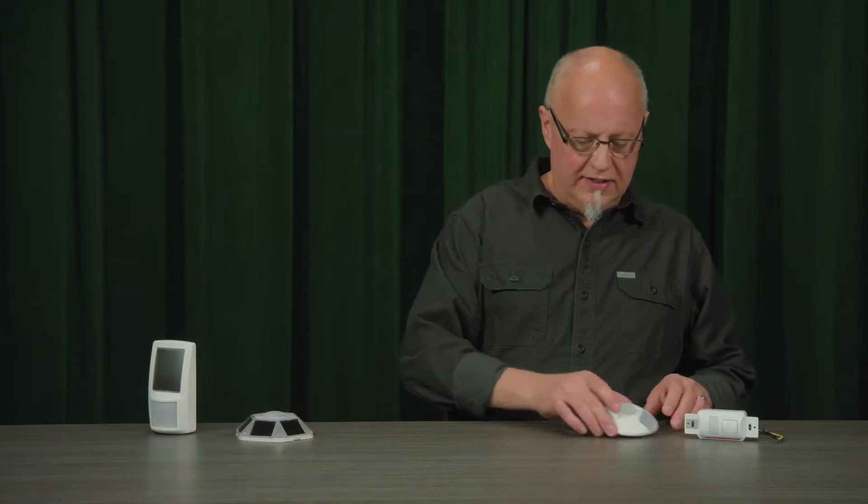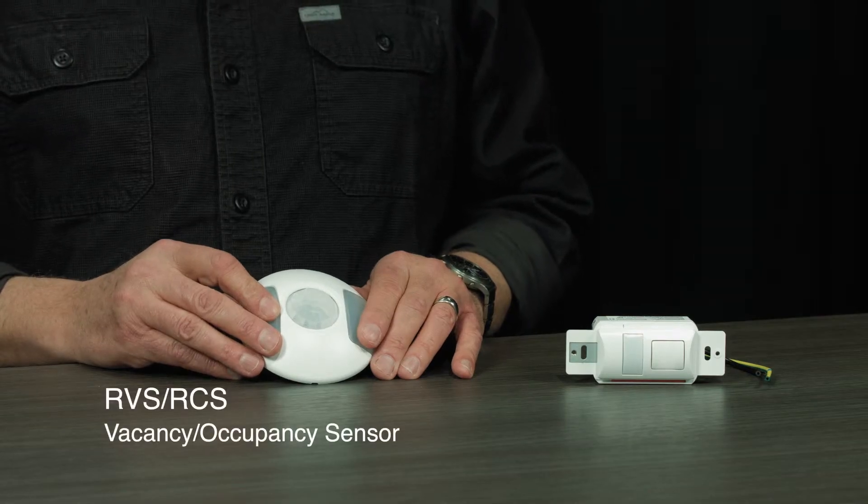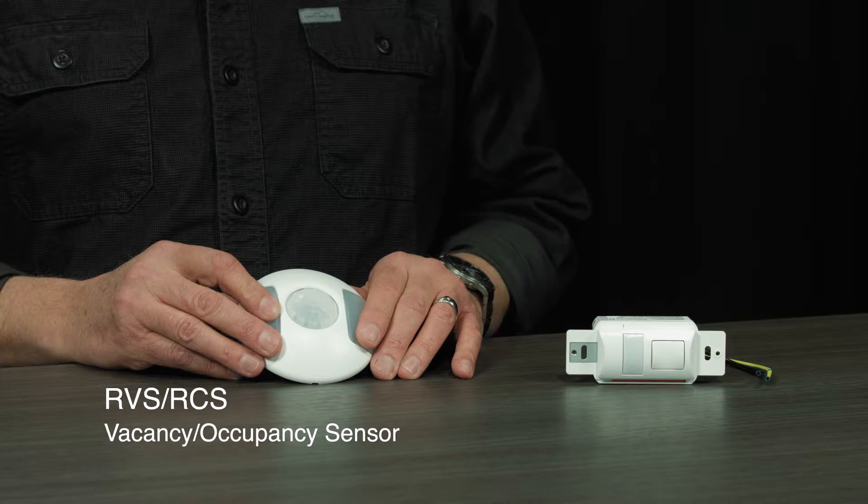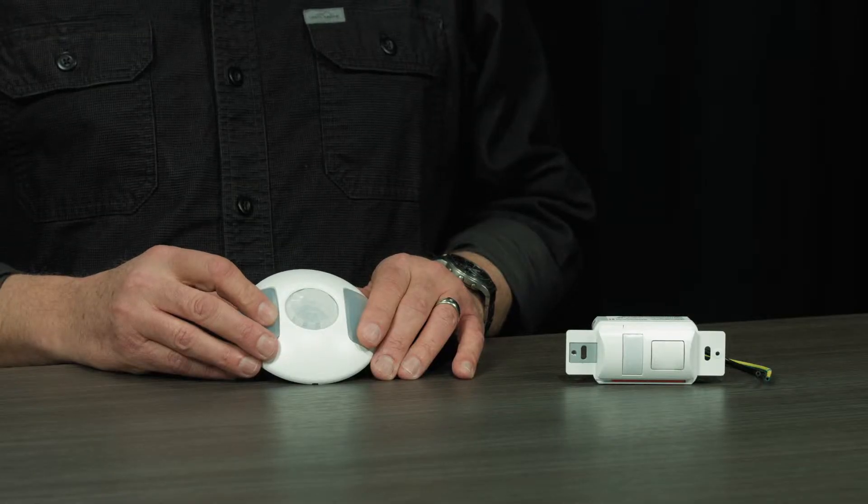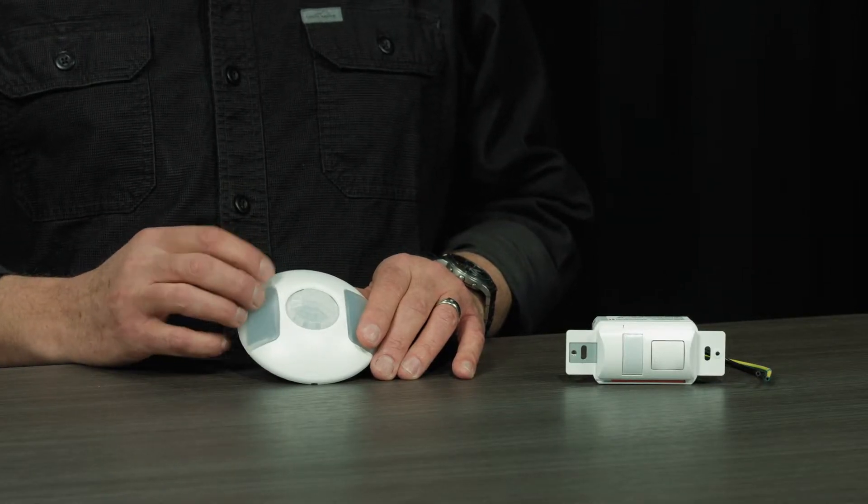This is the RVS or RCS sensor. It comes in two different models either as a vacancy or occupancy sensor. Also available as a passive infrared or a dual technology model. This is the passive infrared model because I do not have the microphone label on it.